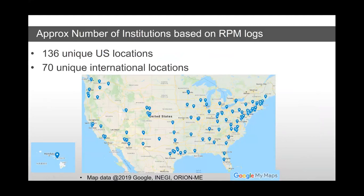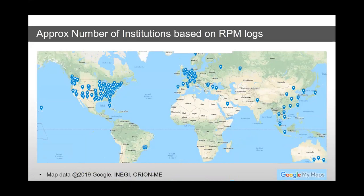We have a bit of a challenge figuring out everywhere On Demand is installed. Based upon our RPM logs, we think it's been downloaded to about 136 unique U.S. locations and about 70 international locations. We know many of these and have logos of these companies and institutions on our website. Part of what we are funded by the NSF to do is expand the community, and we need to report back to the NSF where the community exists, so it helps if we can get that information from you.